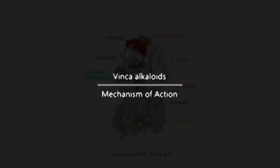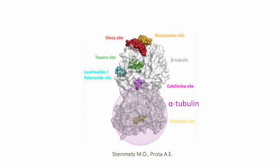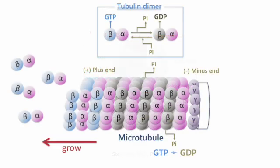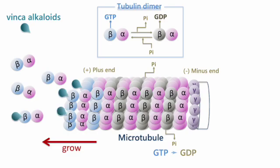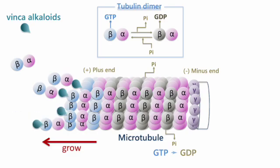The mechanism of action of vinca alkaloids is debated. One theory suggests that vinca alkaloids bind to the microtubular proteins of the mitotic spindle, causing the microtubule to crystallize. This process leads to mitotic arrest or cell death.